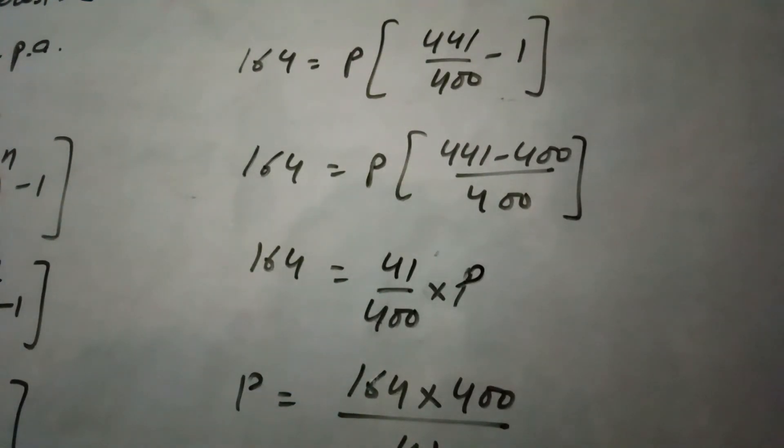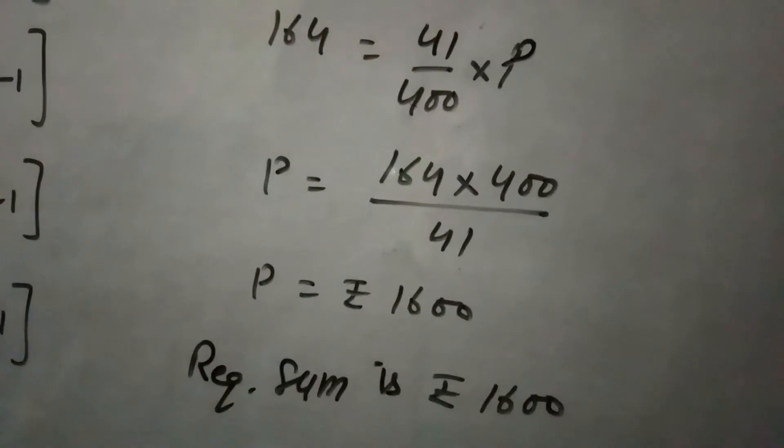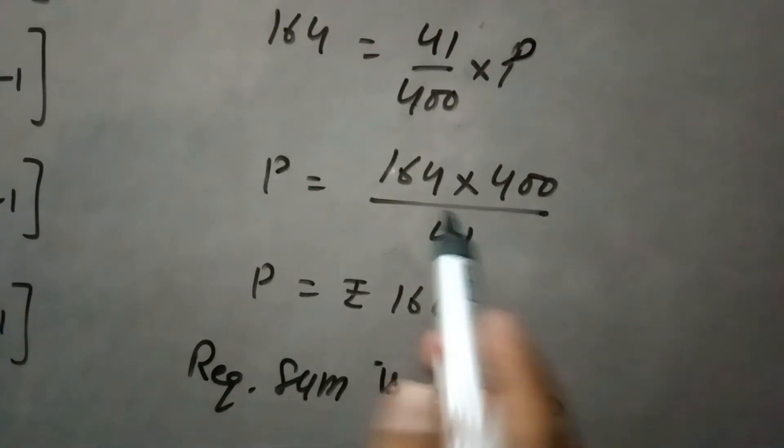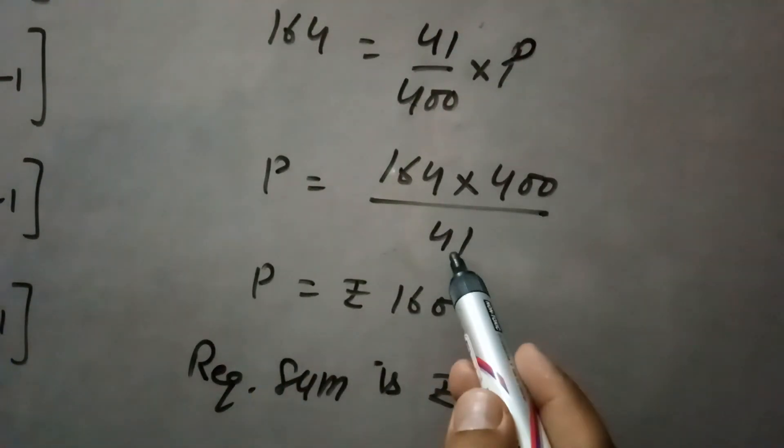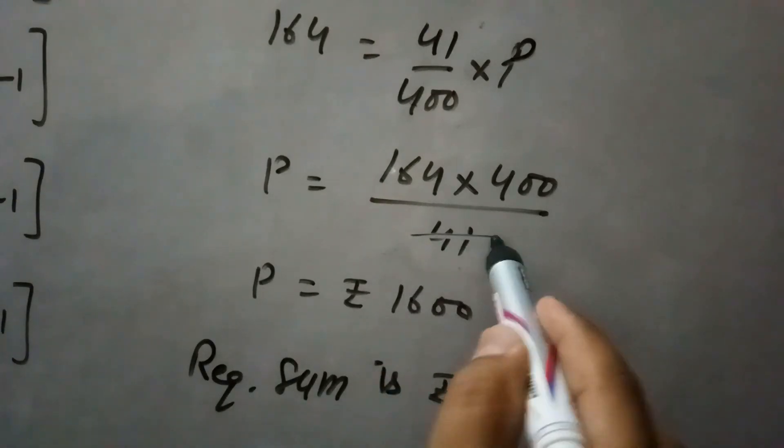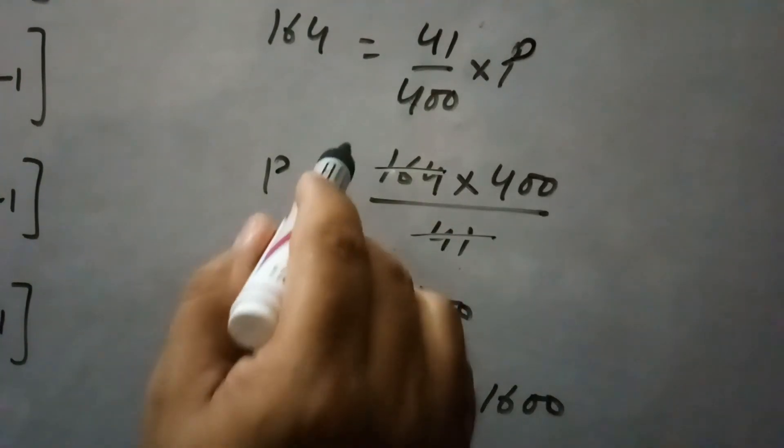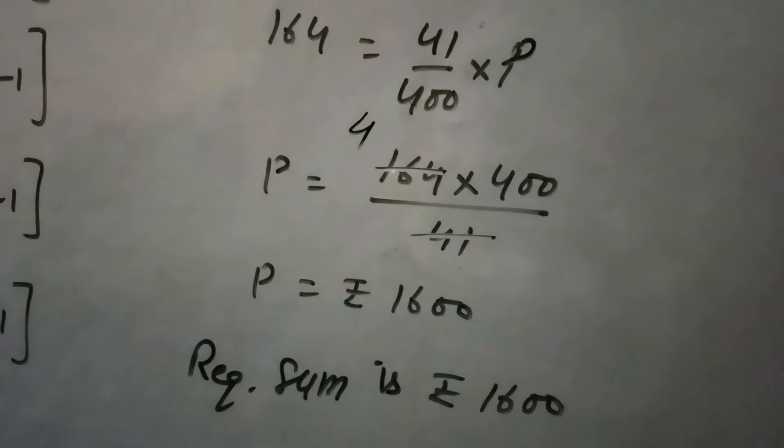So we will now calculate the principal from here. So principal is equal to 164 into 400 upon 41. This 41 and this 164 cancel on the table of 4. So 4 fours are 16, so principle is 1600.